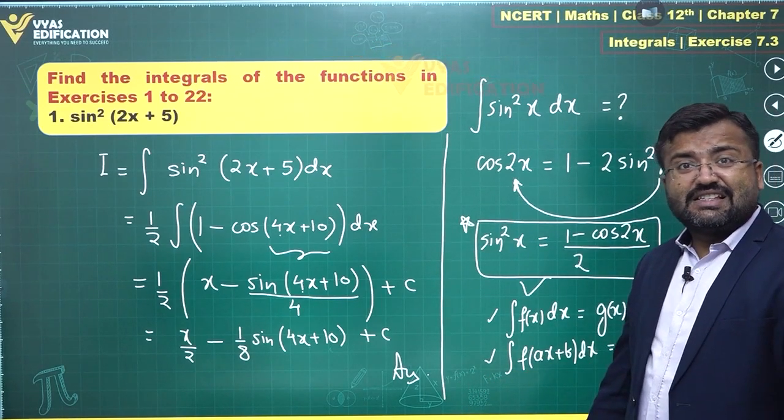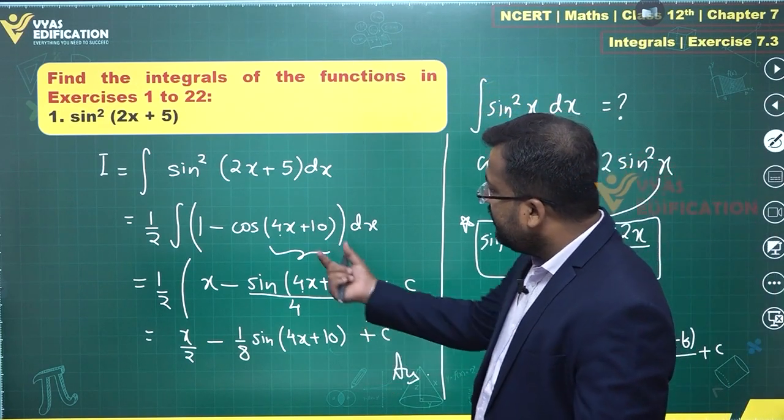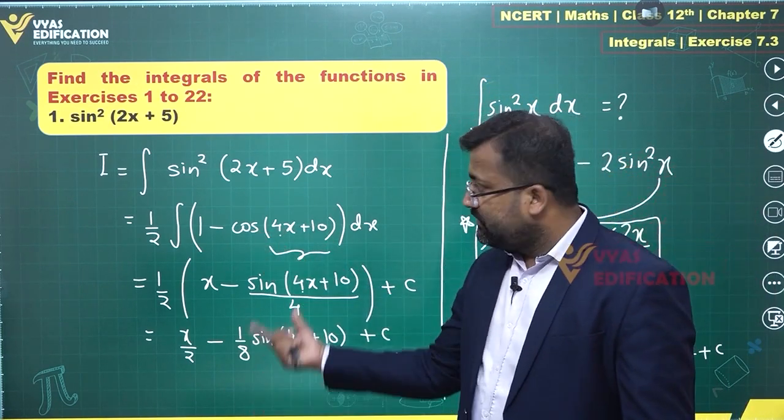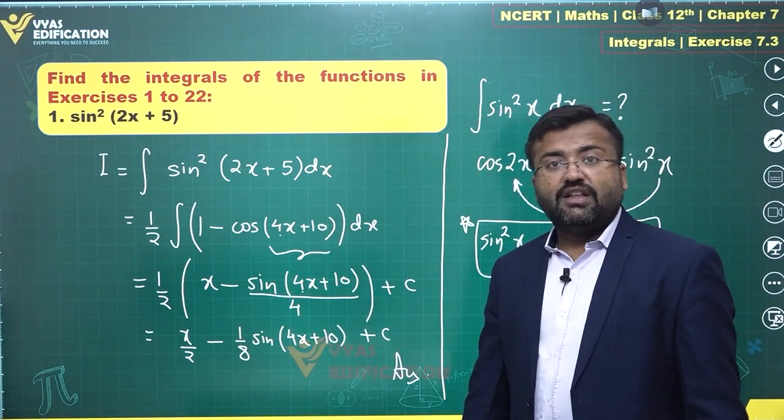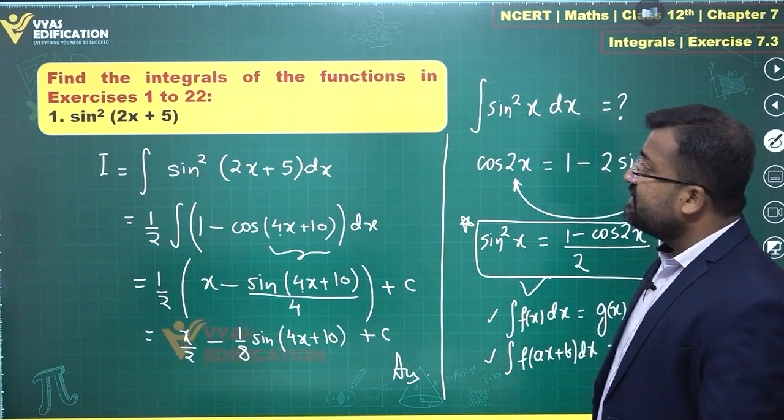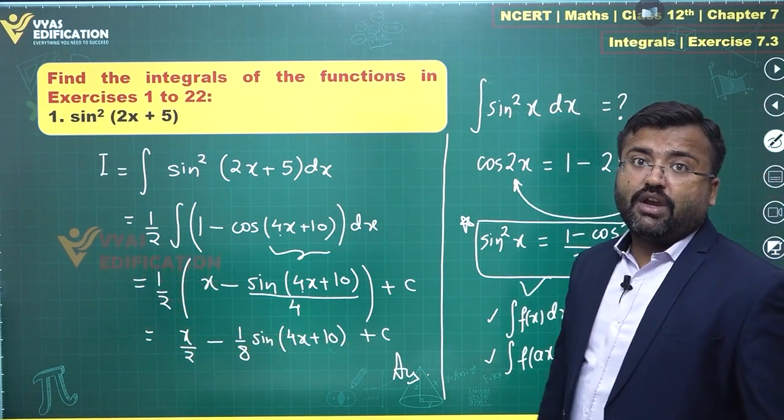We have seen in the previous exercise. So once again, the integral of cos something is sin that something and divided by that 4. That's the important thing and that's the final answer for this first question and that's the complete solution for this question.